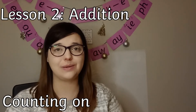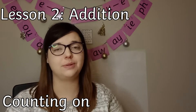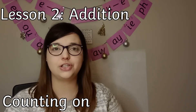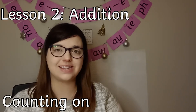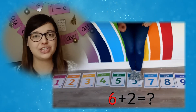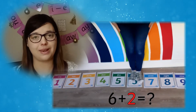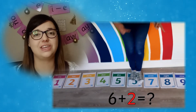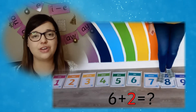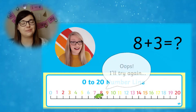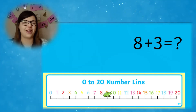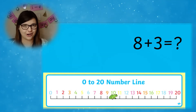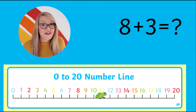Lesson 2 allows children to become the masters of addition by showing them the number line technique for adding, moving from an engaging physical number line activity that you can easily create in your learning space to picture representations with fun friend Freddie the Frog. What number has Freddie landed on?